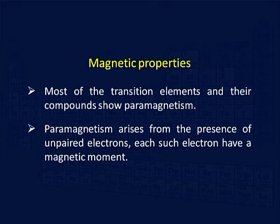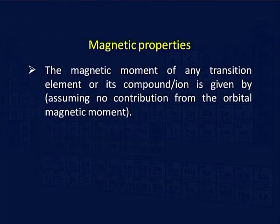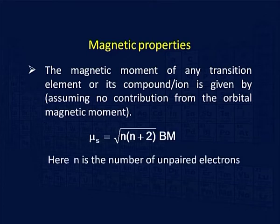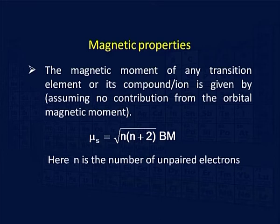Each electron has a contribution towards the magnetic moment. The magnetic moment of any transition element, its compound, or ion is given by the formula μs = √(n(n+2)) BM, where BM is the unit used to measure the magnetic moment and is called the Bohr magneton. Here n represents the number of unpaired electrons in the metal ion or its compound. The μs given by this formula is called the spin-only magnetic moment; sometimes the symbol μso is also used.